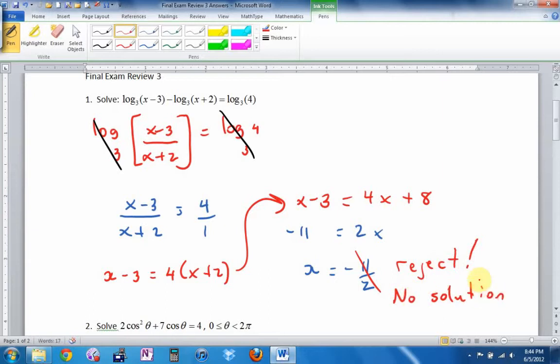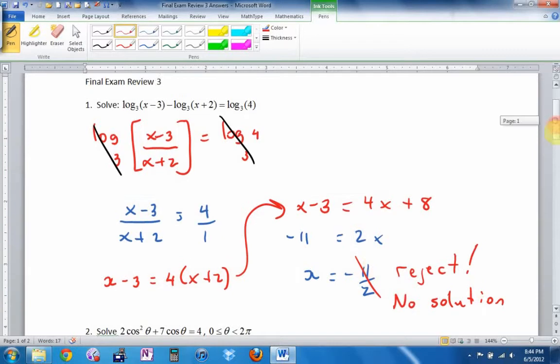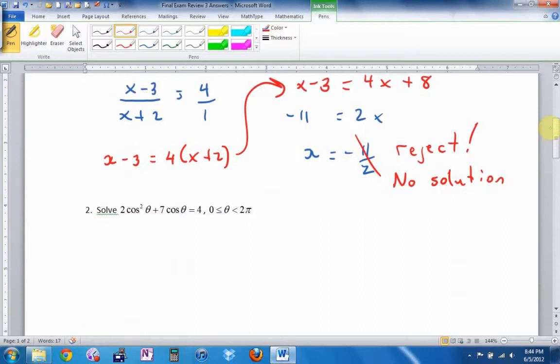Am I going to give you one like that on the test? Ah, maybe. Other possibilities, you could have gotten a quadratic equation here, had two solutions. Maybe one of them might have got rejected. So look at your notes for those.